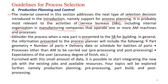The information provided to process planners also includes: processes other than AM to be carried out, like pre-processing and post-processing, and the user's expectations like accuracy, degree of finish, etc. Furnished with all this data, it is possible to start integrating the new job with the existing jobs running on the machines and with the available resources. Four topics will be explored in production planning and control: production planning, pre-processing, part building, and post-processing.